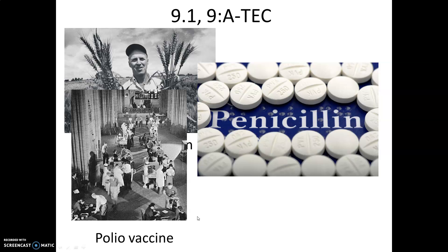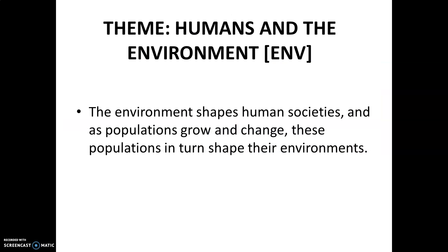Medical innovations like vaccines and antibiotics have increased the ability of humans to survive and live longer. Penicillin, discovered in 1928, is used to treat a variety of bacterial infections like staph infections and strep throat. The polio vaccine, first invented by Jonas Salk in 1955, uses an inactivated form of the virus and helped eliminate polio in the Americas by the mid-1990s. So we have governance and technology covered.